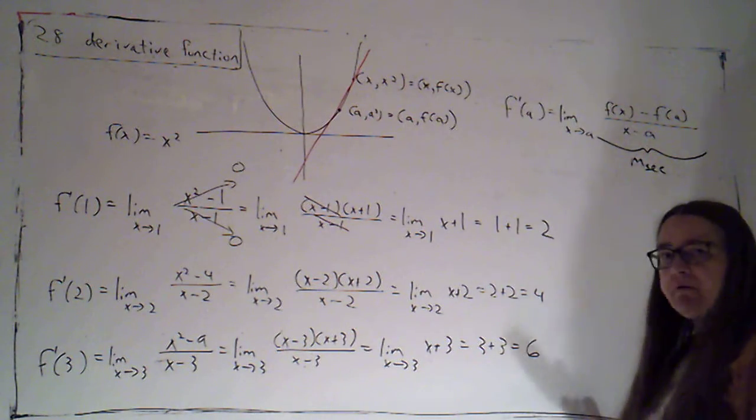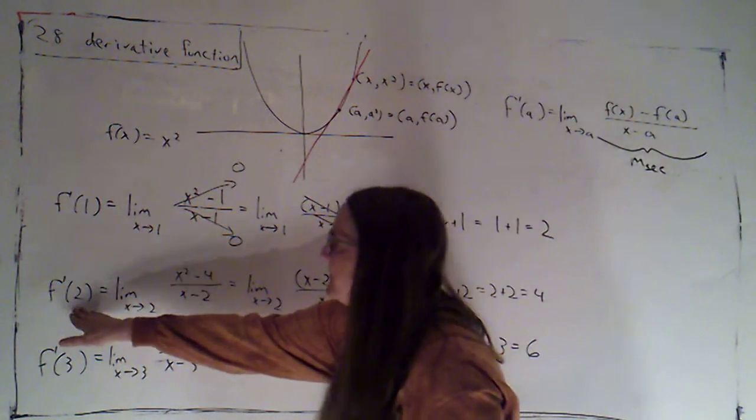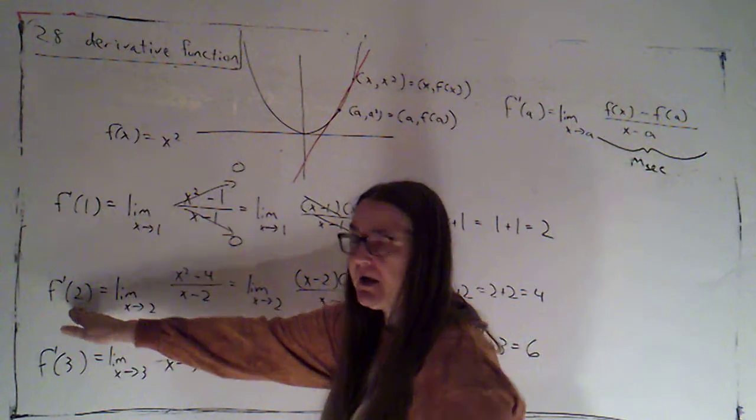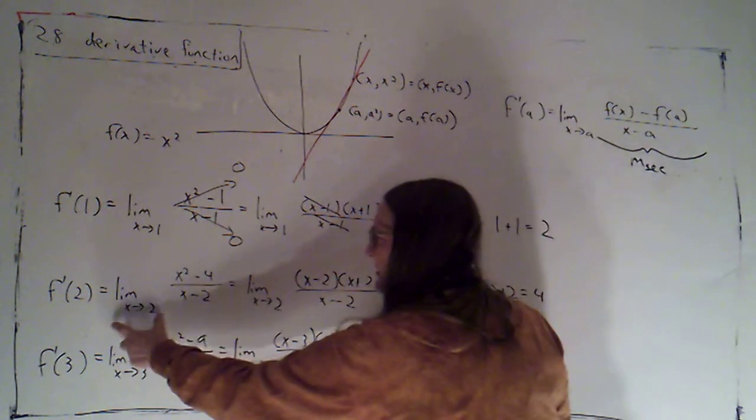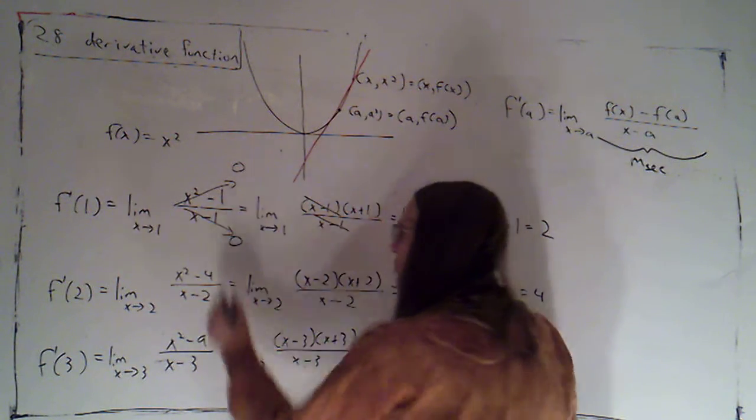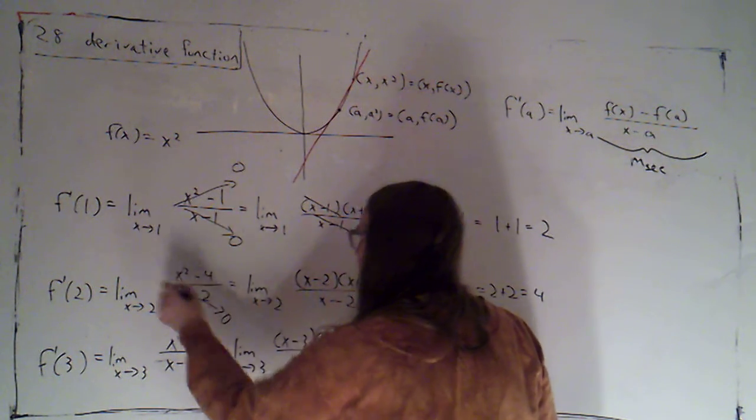Okay, so now I've changed it to let's find the derivative at 2. But the work feels very similar. I set up the limit as x goes to 2, rise over run, and they both go to 0.